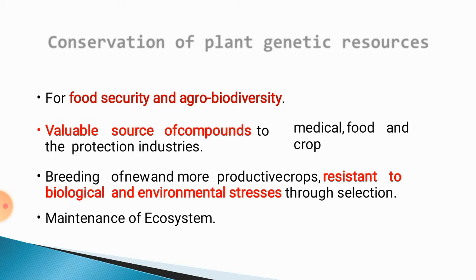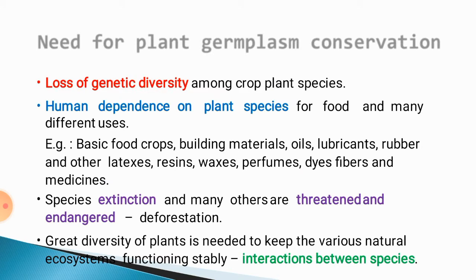Conservation of plant genetic resources is also necessary for maintenance of ecosystems — in order to maintain a natural habitat as it is. Another reason is loss of genetic diversity among crop plants. Due to civilization or modernization, we are doing deforestation and agricultural land is also being converted into urban areas, resulting in loss of genetic diversity. Some species become extinct due to this high rate of industrialization, so in order to maintain those species for future needs, we have to do conservation.